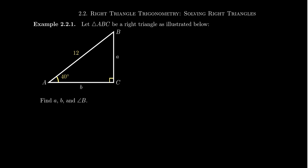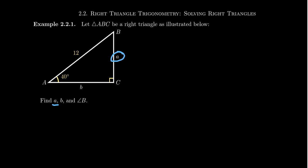Look at triangle ABC on the screen. We know that angle A is 40 degrees and that the hypotenuse is 12. Angle C is the right angle with 90-degree measure. The things we don't know are side a (opposite angle A), side B, and the measure of angle B. We want to figure out how to fill in the rest of this information.